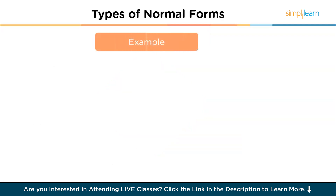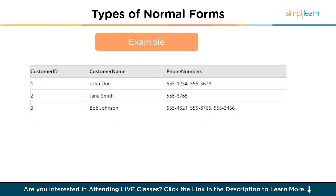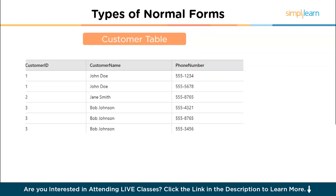Let's check the example of the first normal form. Consider the following unnormalized table with customer ID, customer name and phone numbers. As you can see, the phone numbers are repeated twice. The problem is non-atomic values: the phone numbers column contains multiple phone numbers separated by commas, which violates the atomicity rule of 1NF. To bring this table into 1NF, we split the rows where there are multiple phone numbers. Each row now has a single phone number, ensuring that the phone number column contains atomic values.